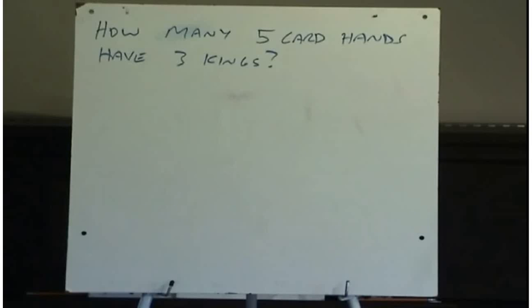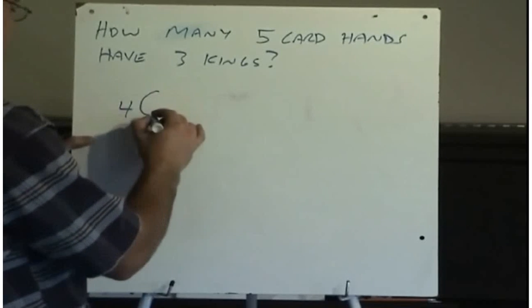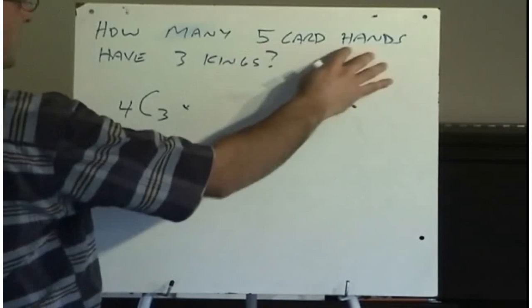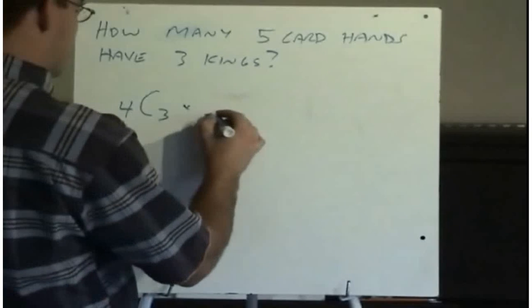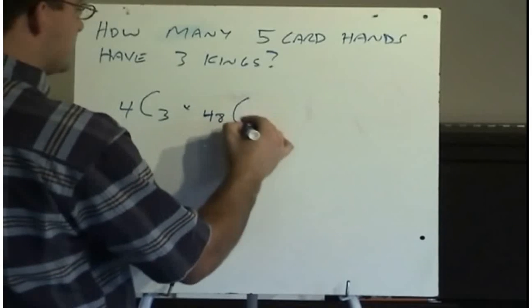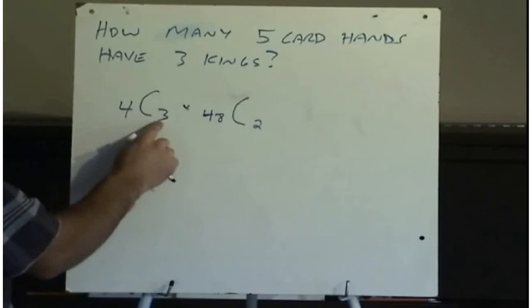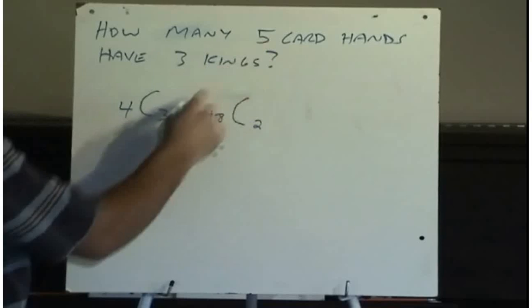How many 5 card hands could have 3 kings? Okay, well, we know there are 4 kings in the deck. And we need to choose 3 of them. So 4, choose 3. And then we need to, obviously if we're having a 5 card hand, that means we need to have 2 other cards that are not kings. So if there are 4 kings in the deck out of the 52, that leaves 48 remaining cards in the deck that are not kings. And we need to choose 2 of those. So 4 kings, select 3 of them. That would give us our 3 kings. And 48 other cards in the deck, and we need to choose 2 of those to make up our 5 card hands.